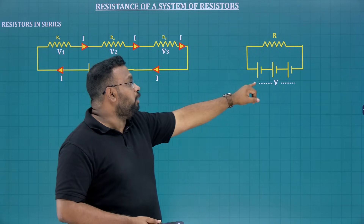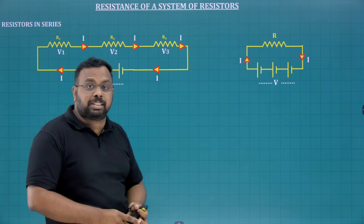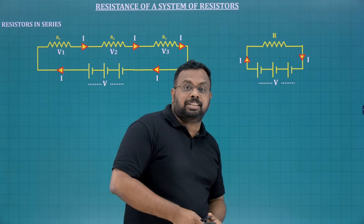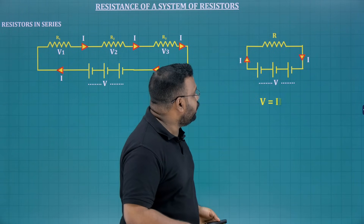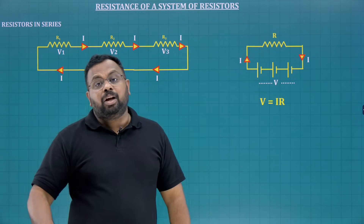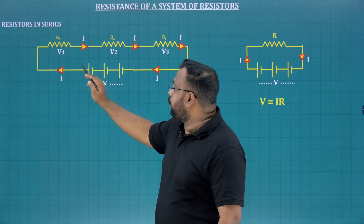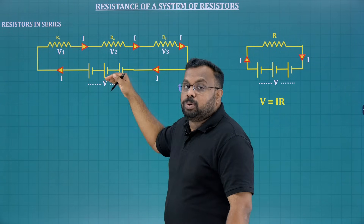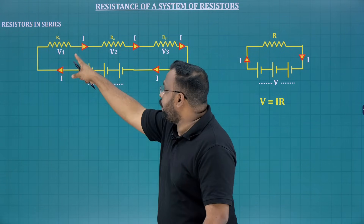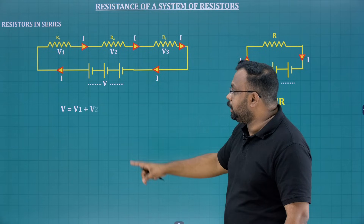This is a very simple derivation. The voltage is V here and also V in the equivalent circuit. The current is I in both, because it is the same circuit — only the difference is instead of showing three resistors, we show one. Voltage is V, current is I, resistance is R. The Ohm's law mathematical formula is V = IR. Now the applied voltage V splits into three parts: V1, V2, and V3. That means if you add these three, you get V. So V = V1 + V2 + V3.